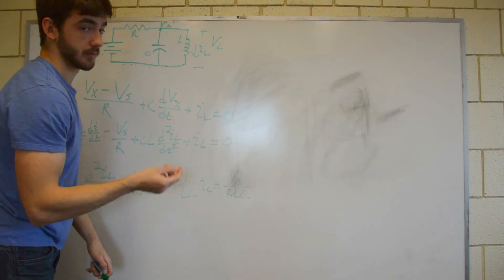And then we rearranged and made the coefficient of the second derivative 1, which gave us d squared i, the second derivative of the current, plus 1 over RC times the derivative of the current, plus 1 over LC times the current, equals your input over RLC.